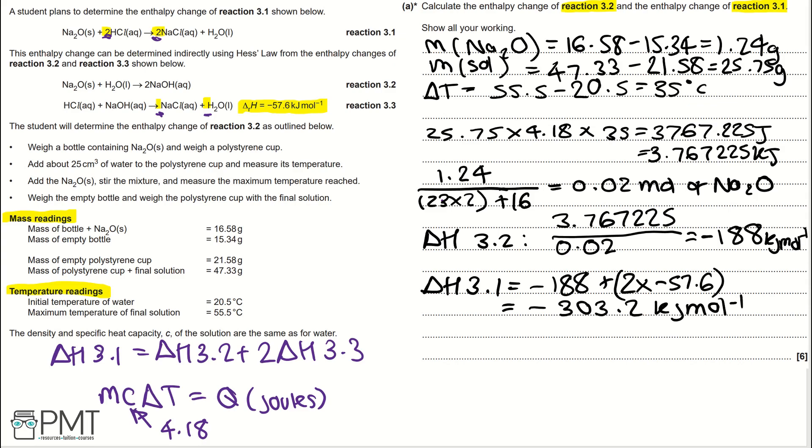In this question, the asterisk on the A means it's a level response question, so you can spot for these in the exam, which means you get marks for detail. You'd get marks for working out your masses of Na₂O and solution, a mark for your temperature change using the MC delta T equation, converting your units, and then a mark for the correct values of reaction 3.2 and reaction 3.1, their enthalpy change values being correct. That will get you six marks for this question.